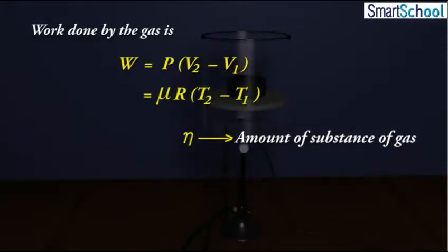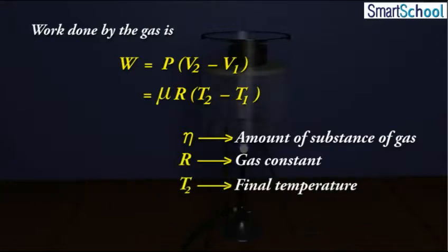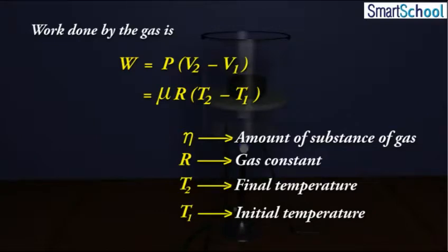Here, mu is the amount of substance of gas, R is the gas constant, T2 is the final temperature, and T1 is the initial temperature.